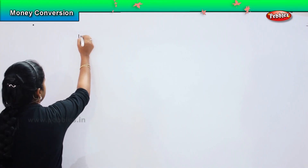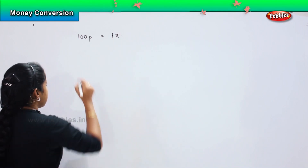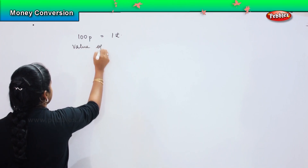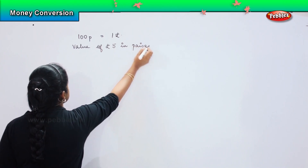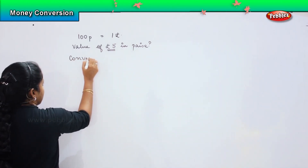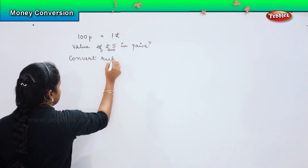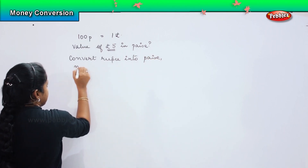Before beginning to solve the questions, there is one more important point to keep in mind. Whenever you are trying to convert rupees into paise, you need to multiply. For example, 100 paise makes 1 rupee. So if the question asks you what is the value of 5 rupees in paise, you are converting rupees into paise. Whenever you have to convert rupees into paise, you need to multiply.